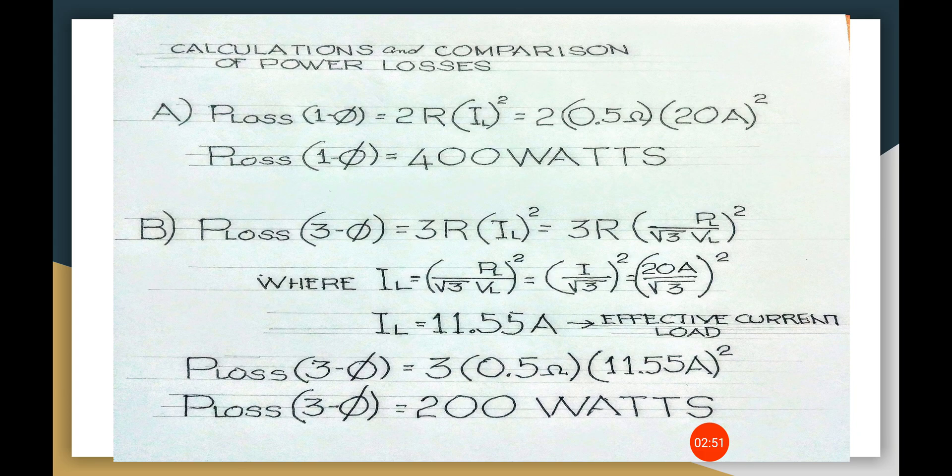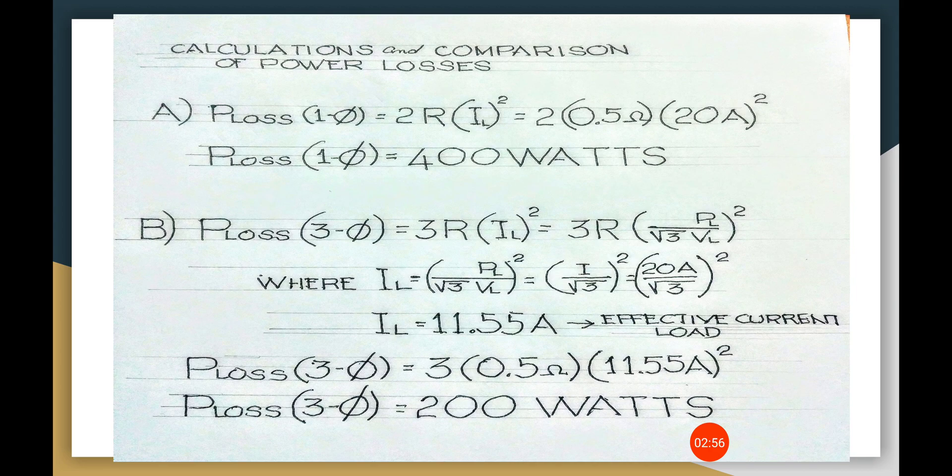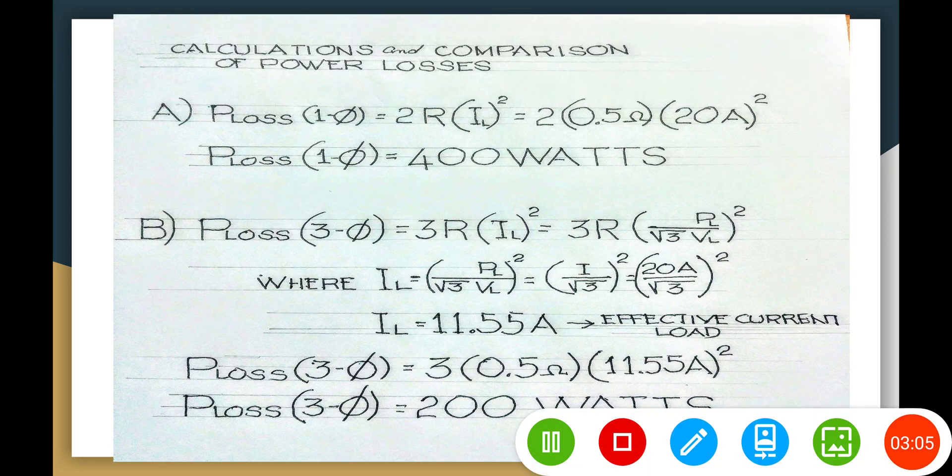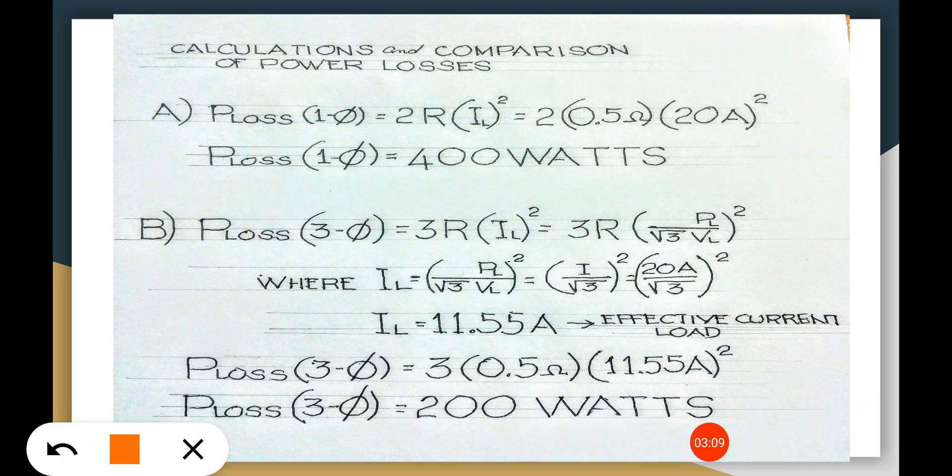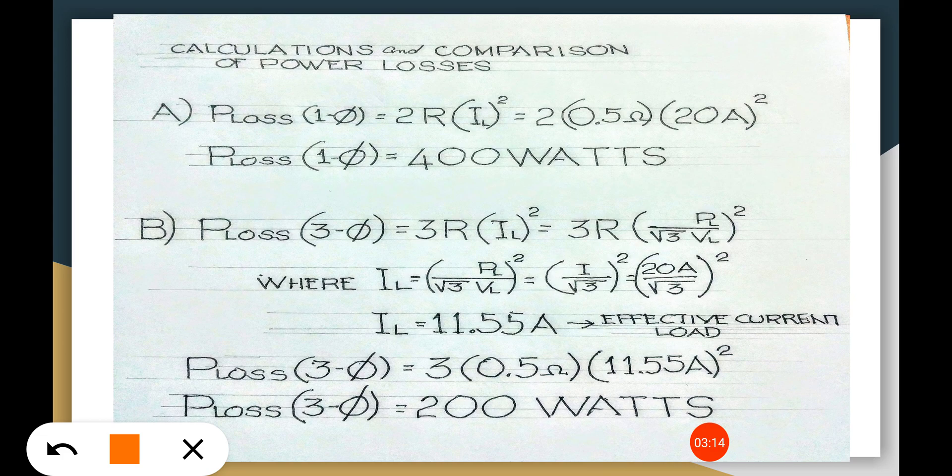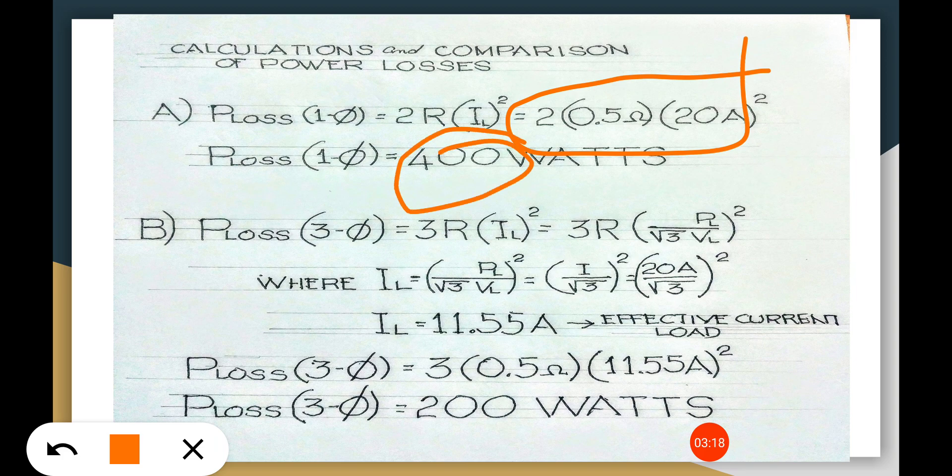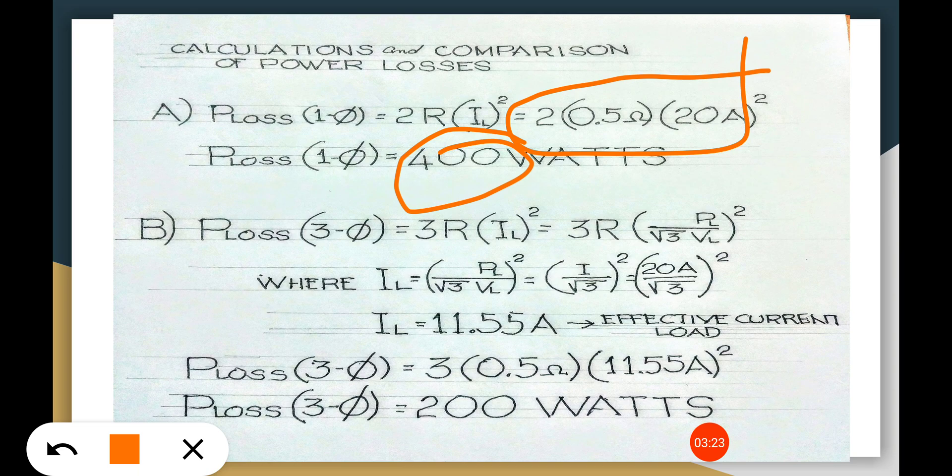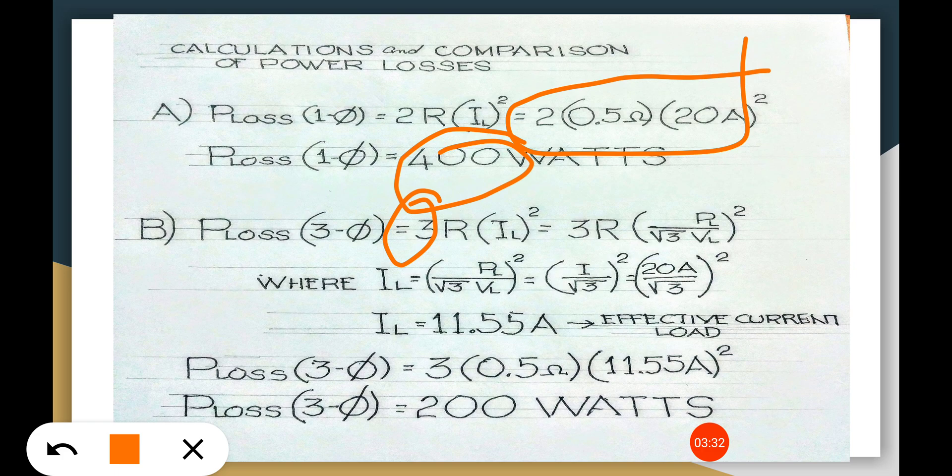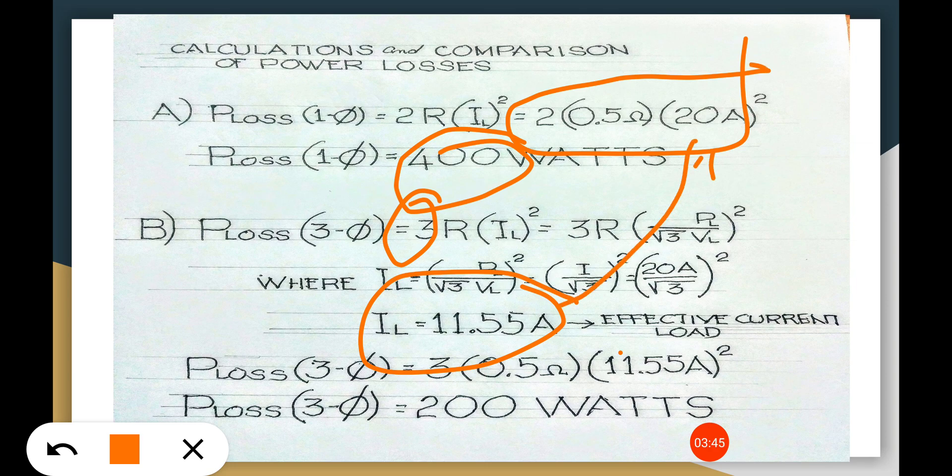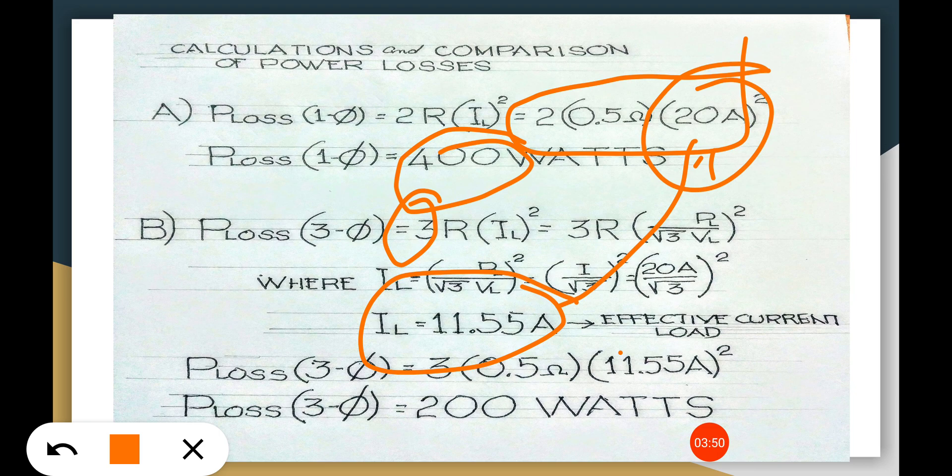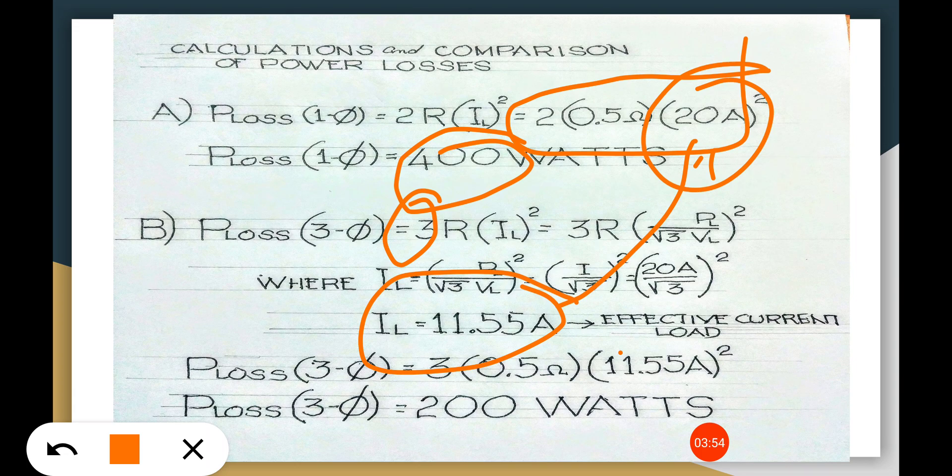So we go to the next one. We have this power loss, you just have to substitute the given ohms of resistance and amperes. And we have the ohms and our system is 4, we have two here because it's a two wire system. So we have this two, so this is the watts. And for the three phase system we have 3R I squared, the three because it's three wires, so we multiply this by three. And so we have this effective current load of 11.55A as compared to 20 amps, which has a significant reduction in the power loss of a three phase system, which is only 200 watts compared to 400 watts.